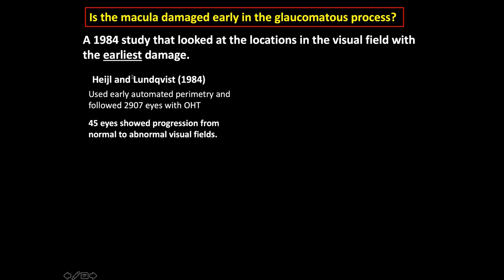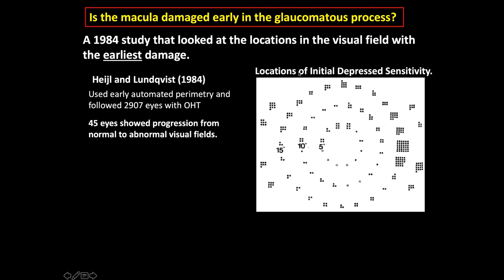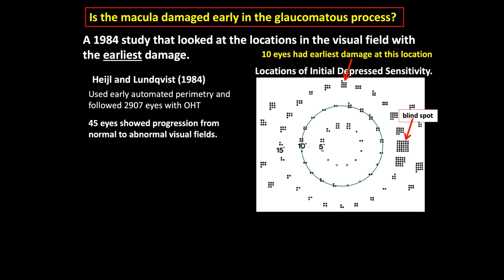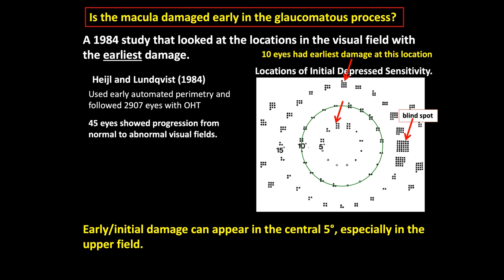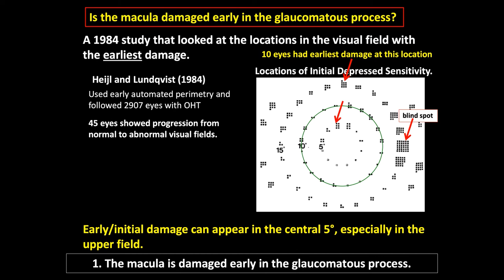There's supporting data in the literature that's been largely ignored. A 1984 study examined locations with the earliest glaucoma damage — almost 3,000 eyes with high intraocular pressure, 45 of which showed progression from normal to abnormal. Within the 10-degree circle, early glaucoma damage was present. Early or initial damage can appear in the central 5 degrees, especially in the upper visual field — confirming that the macula is damaged early in the glaucoma process.